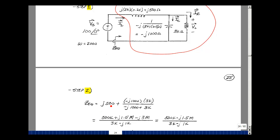We have j 500 ohms in series with this parallel combination of minus j 1000 and 3000. So I'll take the product over the sum. So I have 3K minus j 1000.